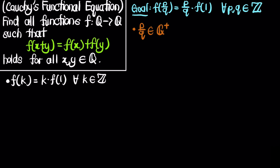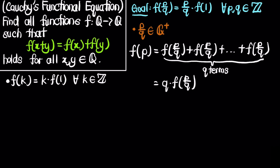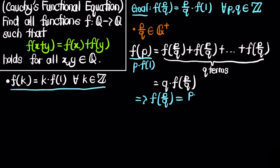We notice that f(p) = f(p/q) + f(p/q) + ... with q terms total, valid by the additivity of f. This gives f(p) = q·f(p/q). But f(p) = p·f(1) from our previous result, so therefore f(p/q) = p·f(1)/q = (p/q)·f(1).